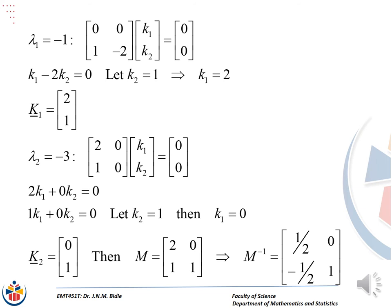After substitution and finding the determinant, we solve for λ and get λ1 equal to negative 1 and λ2 equal to negative 3. The spectral matrix has the eigenvalues on the main diagonal and zeros everywhere else. To find the modal matrix for λ1, we substitute into A minus λI, getting the matrix with rows [0, 0] and [1, -2]. We multiply that by [k1, k2] transpose and equate to the zero vector. This gives k1 minus 2k2 equal to 0, and letting k2 equal to 1 gives the first eigenvector as [2, 1].